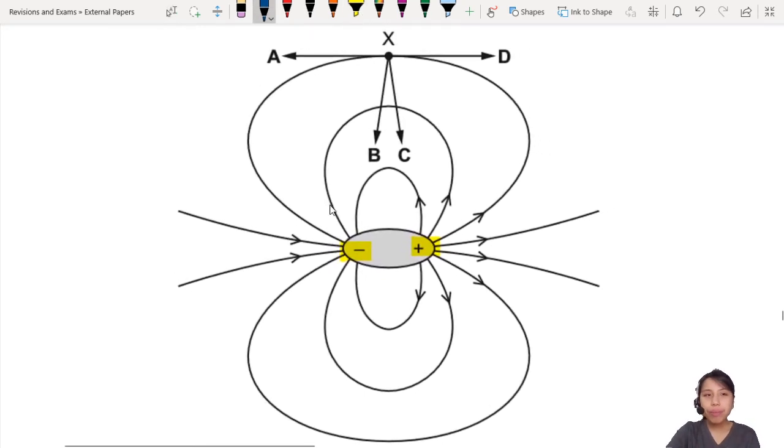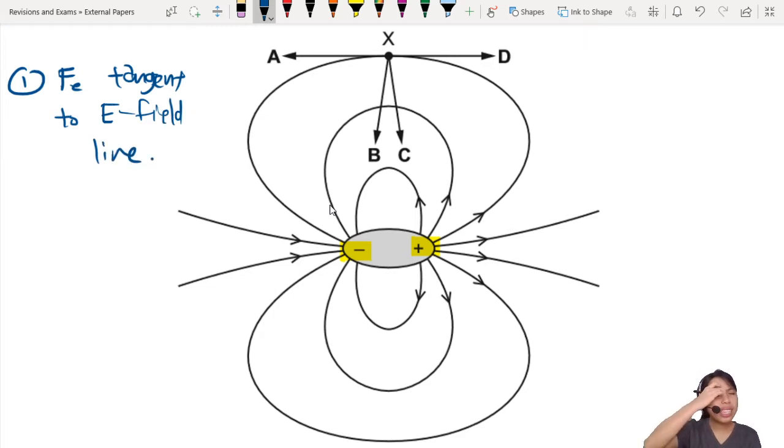Number one: the electric force on the particle will be tangent to the electric field line. So just by looking at that, B and C are out. Your force will not cross the electric field line, it's just tangent.